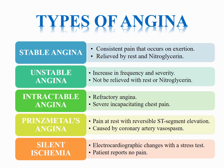Prinzmetal's angina, referred to as variant angina, is caused by a temporary increase in coronary vasospasm, with pain at rest and reversible ST segment elevation. The last one is silent ischemia, a condition in which an inadequate supply of oxygen-rich blood to the heart does not cause symptoms such as chest pain.